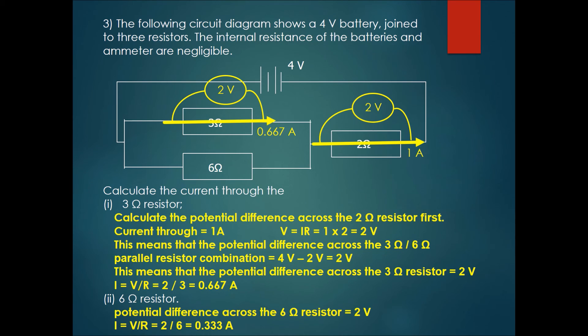Now let's do the same with the 6 ohm resistor. Because of the same concept, if there is 2 volts of potential difference across this one, there should also be 2 volts of potential difference across this resistor, given that they are in parallel.